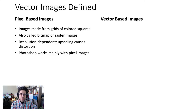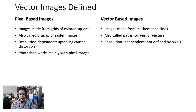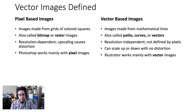Vector-based images, on the other hand, are images made from mathematically defined shapes, also called paths, curves, or vectors. These types of images are resolution independent, since they're not defined by pixels. That means, among other things, we can scale them up or down as much as we want with no distortion. Illustrator works mainly with vector-based images, and that's what we'll be working with for the next four weeks of this unit.